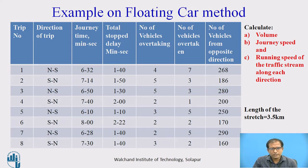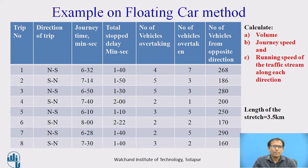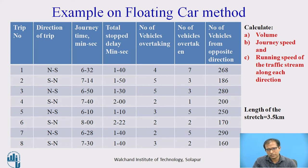Now we will take an example on the floating car method. We already know how to conduct a speed and delay study using the floating car method, so we will work through an example. The survey is conducted in two directions: north-south and south-north. We are asked to calculate volume, journey speed, and running speed of the traffic stream along each direction. The length of the stretch is given as 3.5 kilometers.